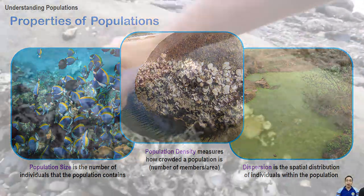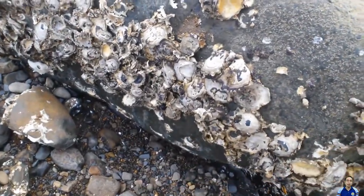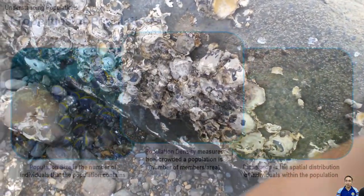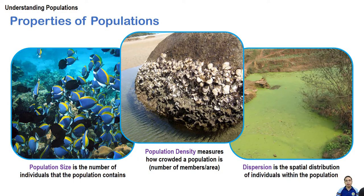These are rock oysters — can you estimate their number in this rock? They're sort of crowded here. Dispersion, on the other hand, is the spatial distribution of individuals within the population — this is how they arrange themselves relative to one another.